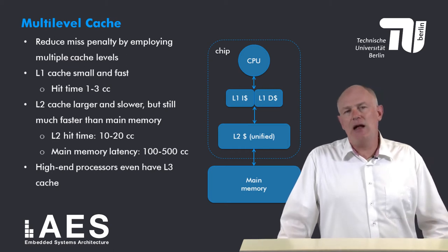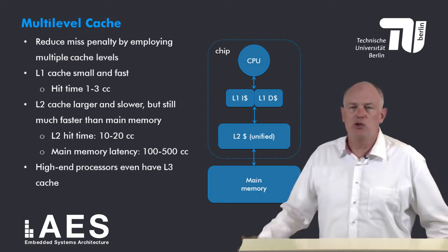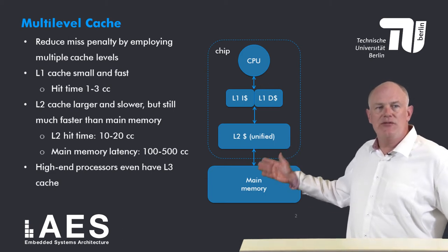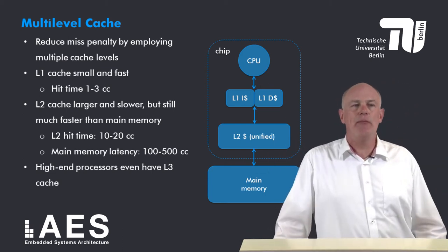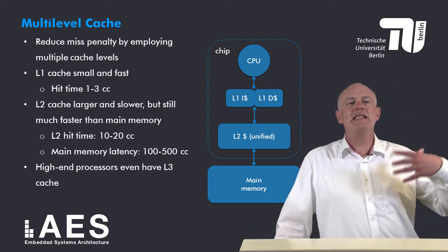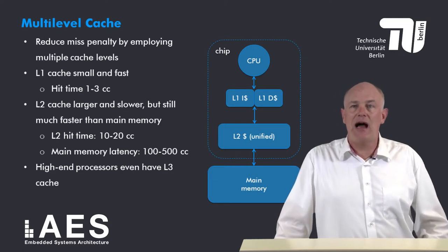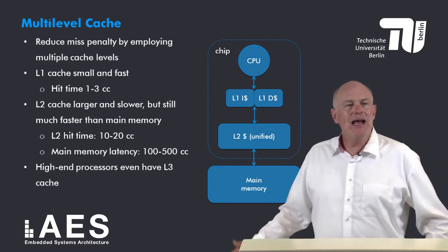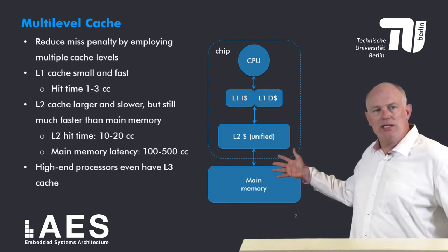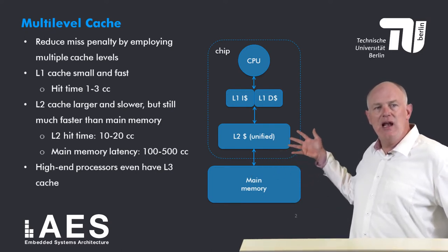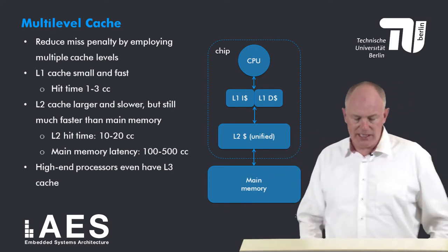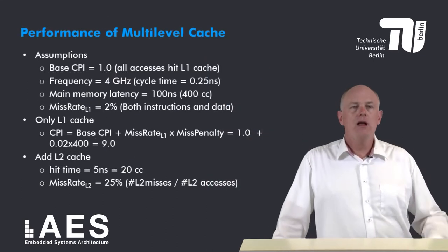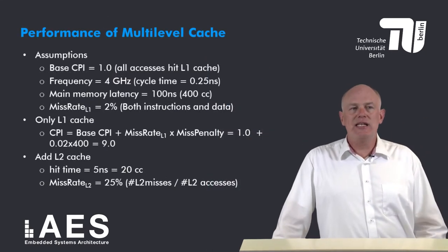Typical L2 hit times are 10 to 20 clock cycles, but this is still much faster than the latency to main memory, which is on the order of 100 to 500 processor clock cycles. High-performance processors even have a level three cache, which brings us to the next question.